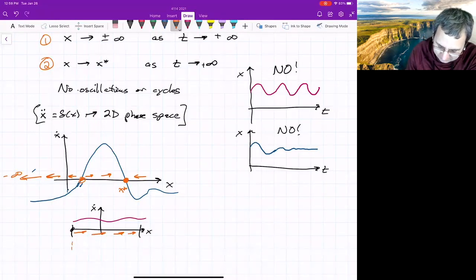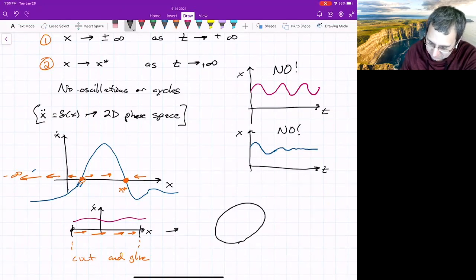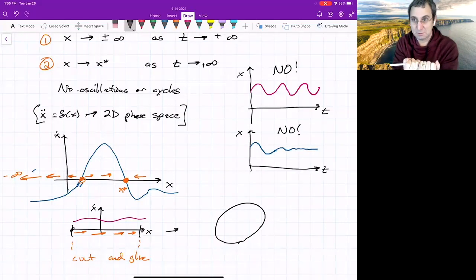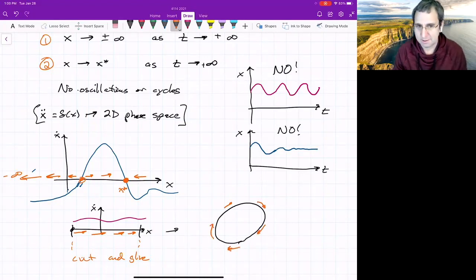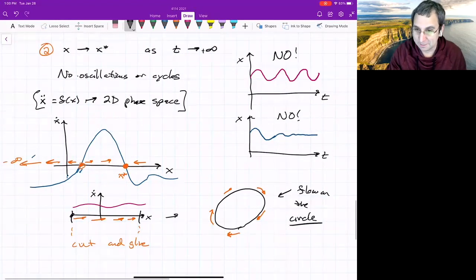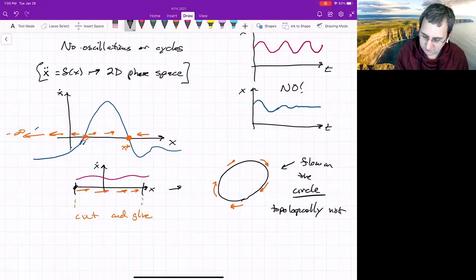Because this is a vector field that it's always pointing to the right. So if I take these, cut and glue, then what could I get? I just sort of bend the x-axis onto itself. And I have a vector field pointing in one direction the whole time. And what do you know? I've made a cycle. So this would mean a flow on the circle, which is topologically not the same as the flow on the real line.